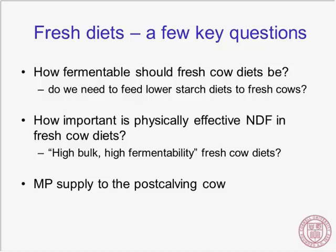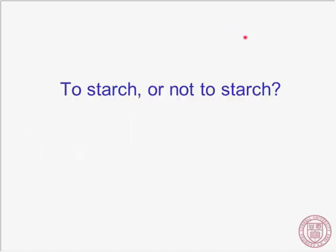Switching to fresh cow diets — an area of quite active work by a number of groups. Some key questions: How fermentable should fresh cow diets be? There's discussion about starch levels, and some data with BMR corn silage showing improvement in fresh cow performance with more fermentable fiber. Do we need to feed lower starch diets for fresh cows? How important is physically effective fiber? Is there an opportunity for higher-bulk, higher-fermentability fresh cow diets? And what about protein and metabolizable protein supply to the fresh cow?